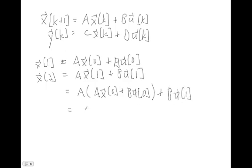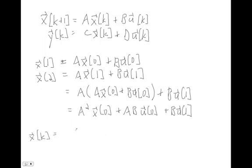And so if you work that out you see that's equal to A squared x at zero plus AB u at zero plus B u at one. And if you were to repeat this process over and over you would get a general equation for x at k which is equal to A to the kth power times our initial condition x at zero plus this summation.